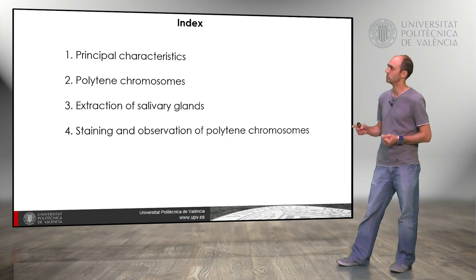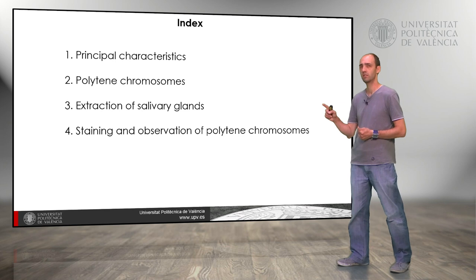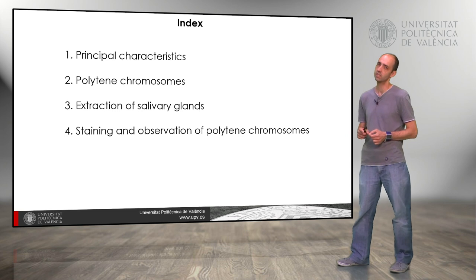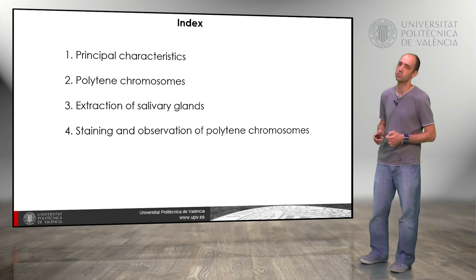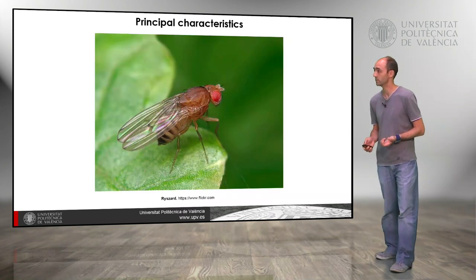We are going to see the principal characteristics of the insect, of the polytene chromosomes, how to extract the salivary glands and how to stain them and observe the polytene chromosomes, and their principal characteristics.